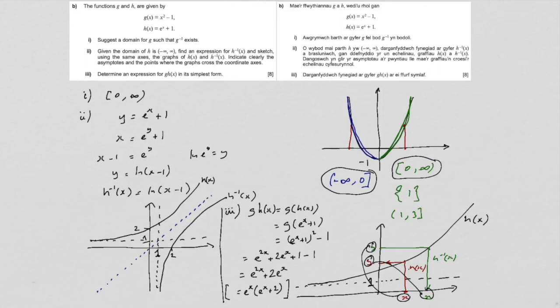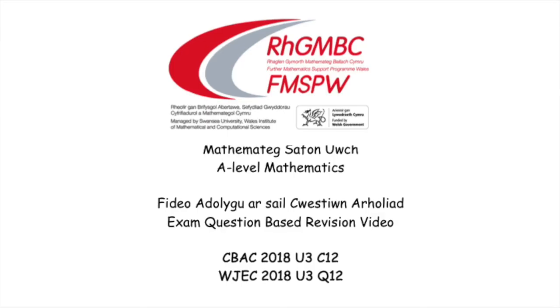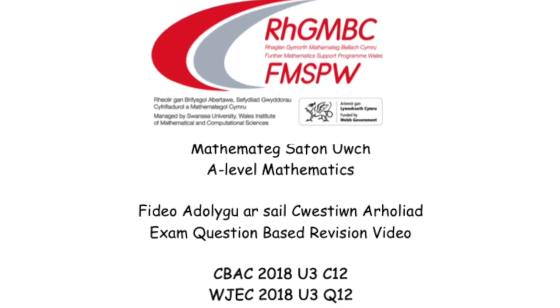Just a little note to add on at the end. A little error of mine, having checked it. Is that this h to the minus one of x that I wrote here should say, of course, h to the minus one of y. And that ties back into part two. Because when we're changing to h to the minus one of x, we are reflecting it, which is why we swap everything round, swap the x's and y's round at the beginning.